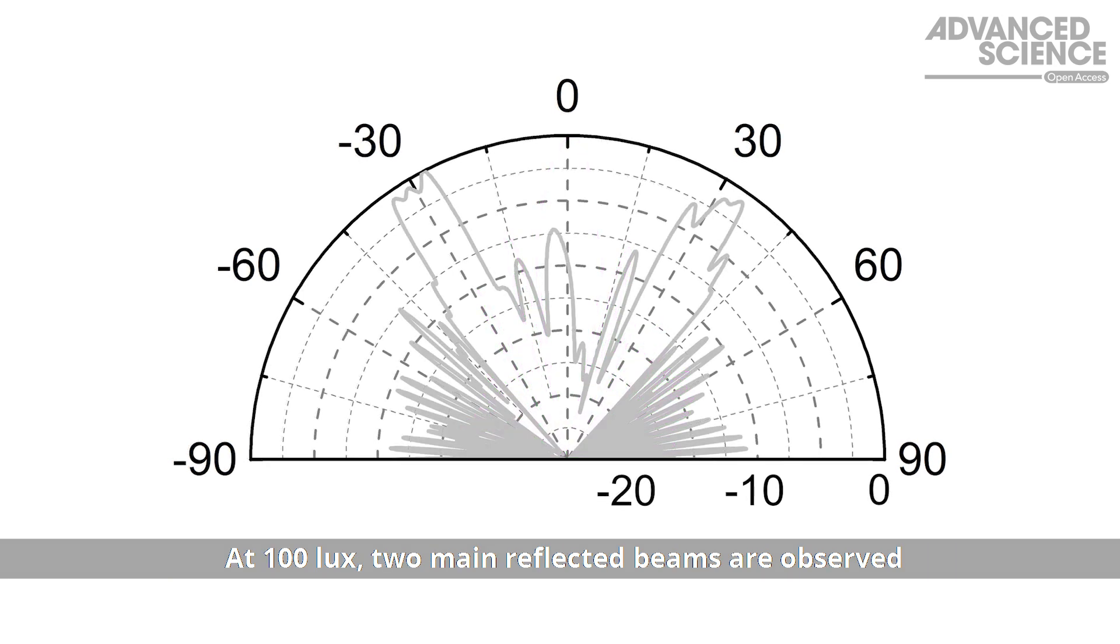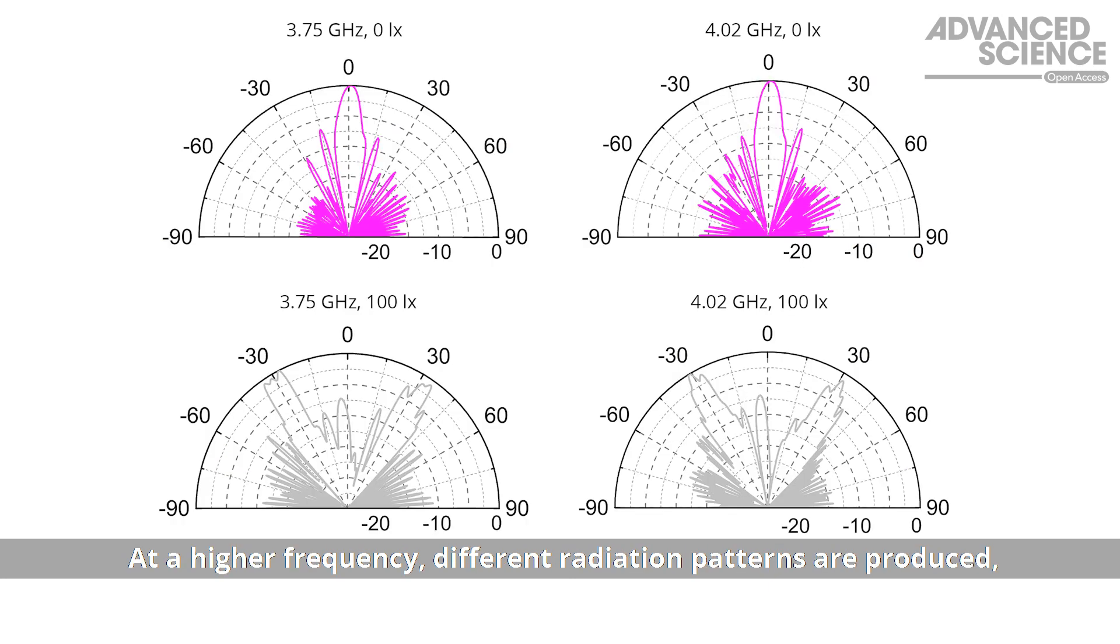At 100 lux, two main reflected beams are observed, and the coding sequence is 010101. At a higher frequency, different radiation patterns are produced, serving as a proof of concept for this method.